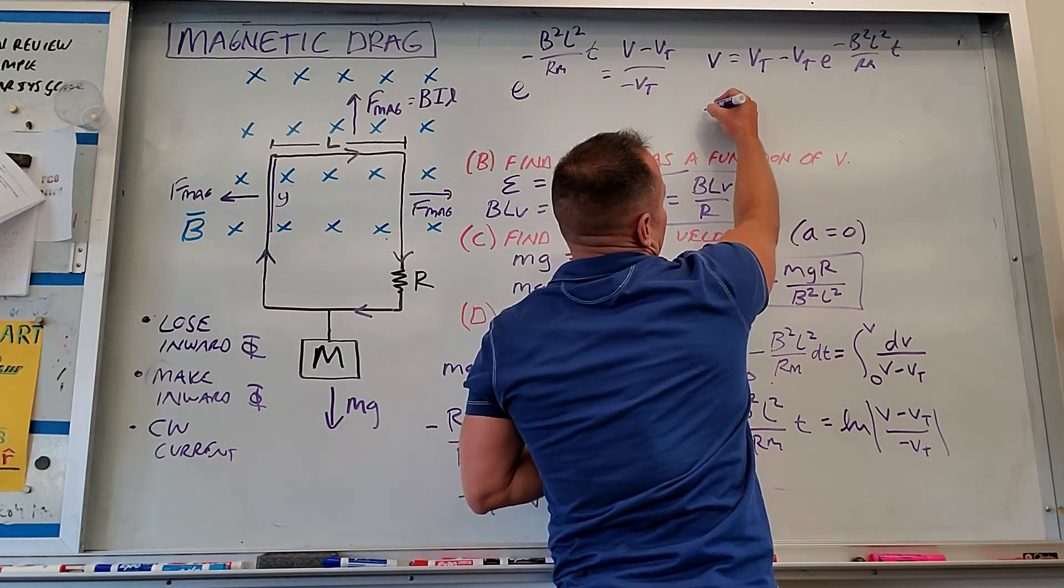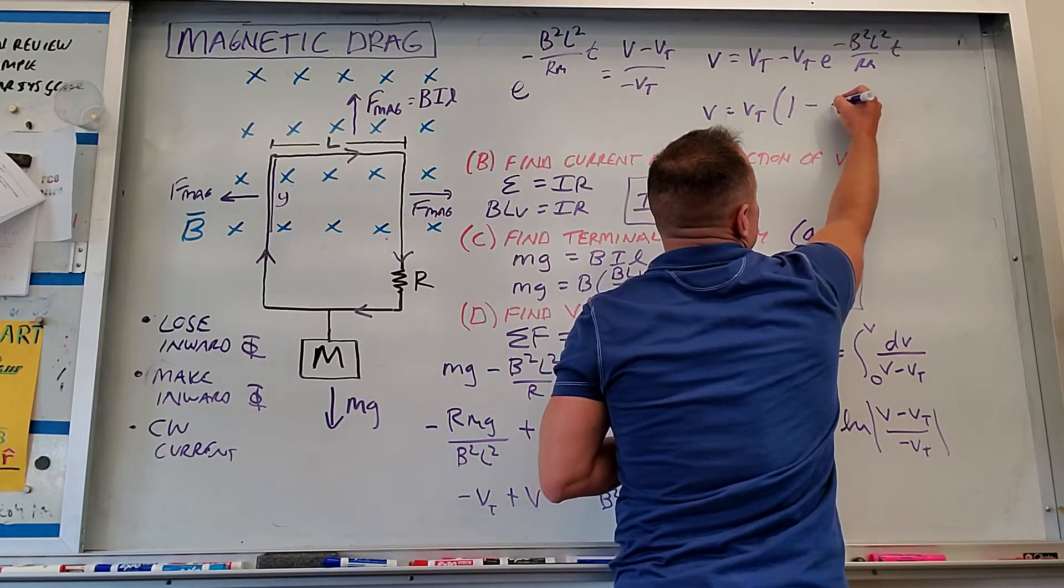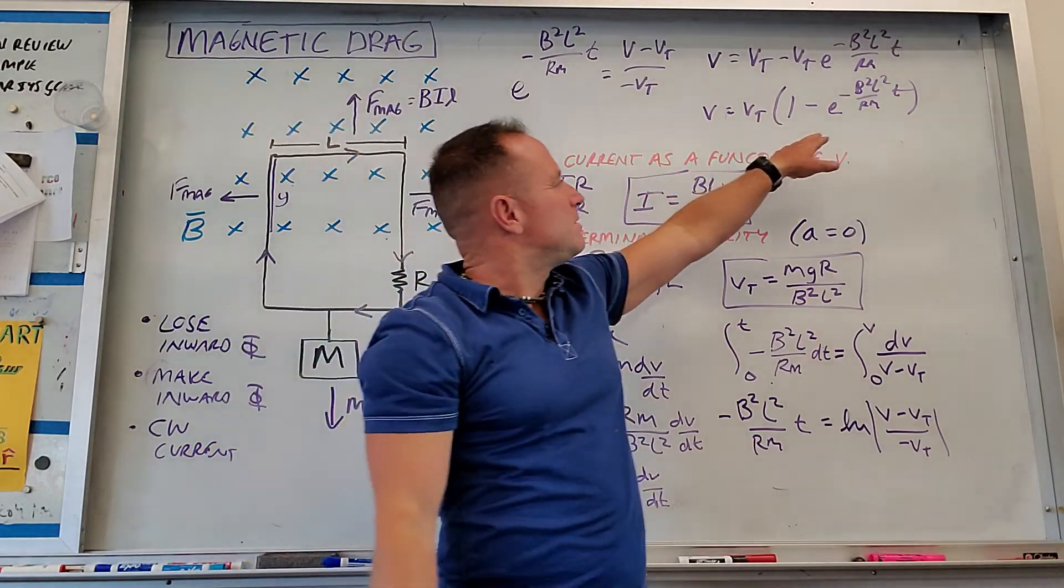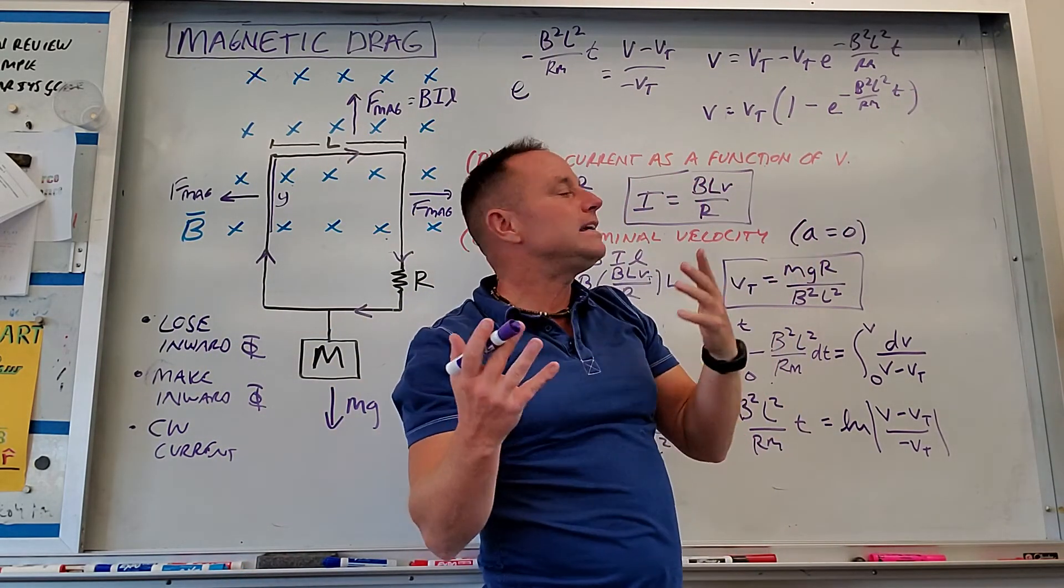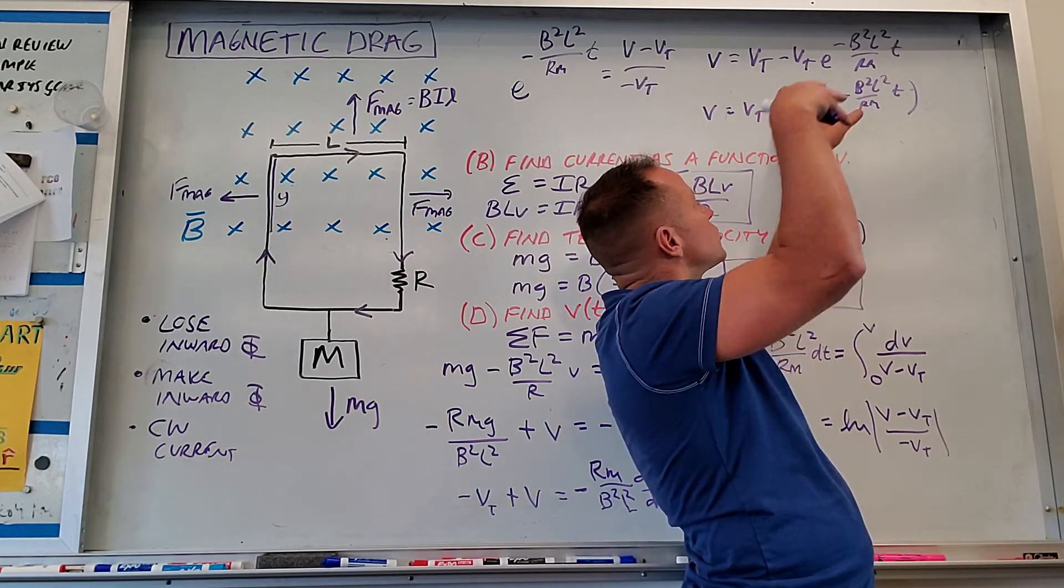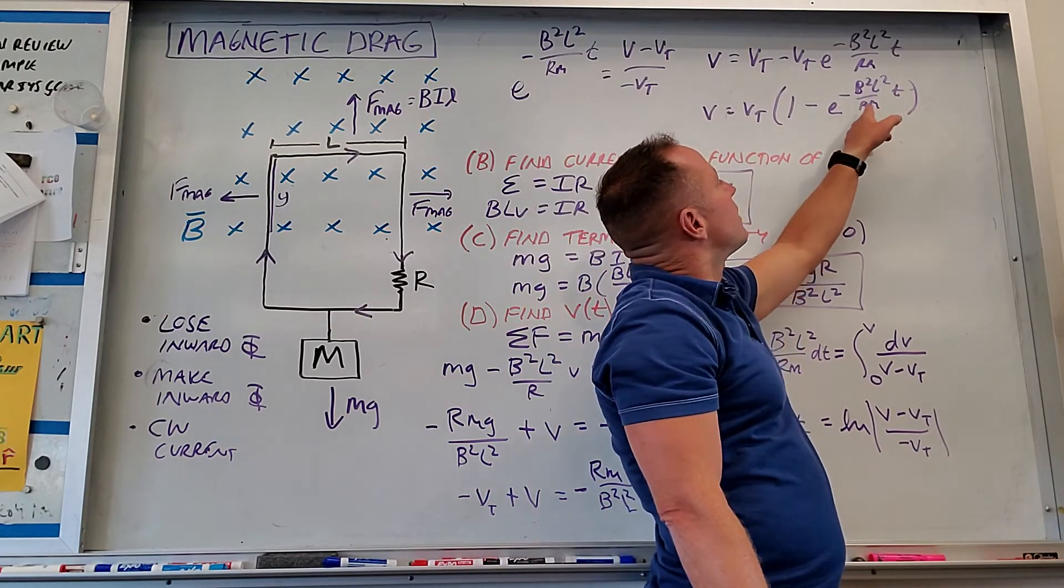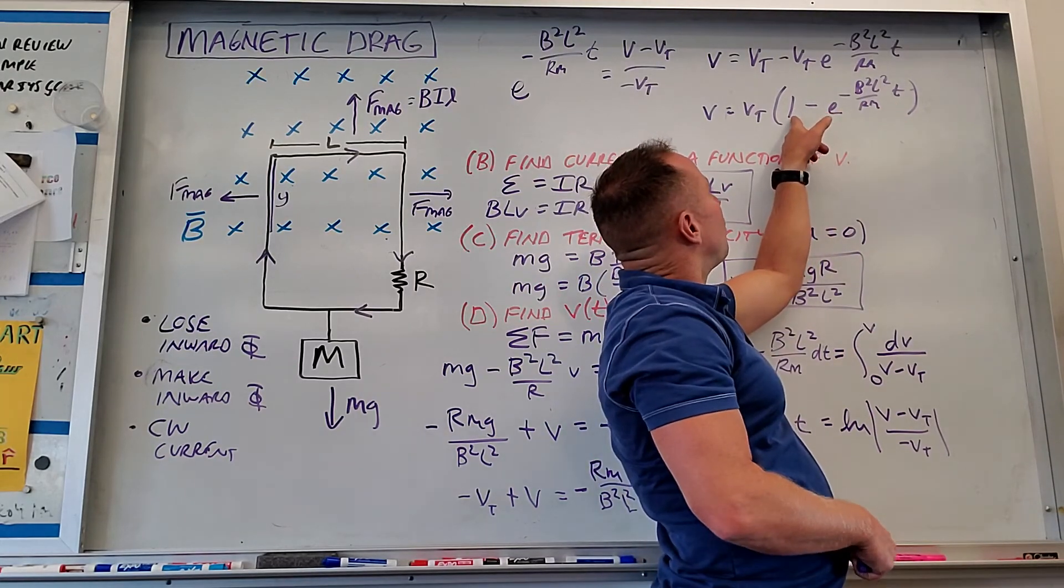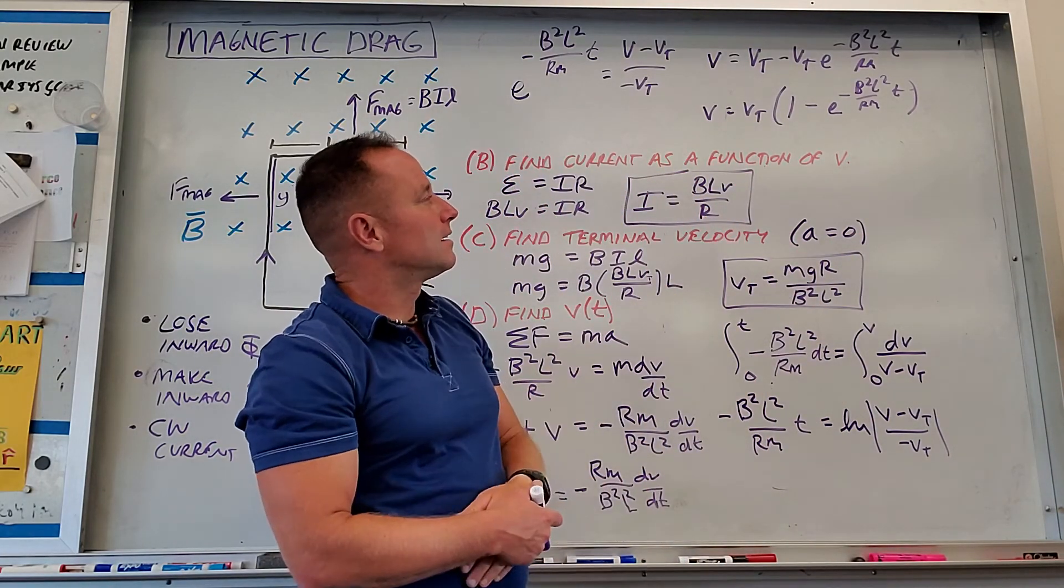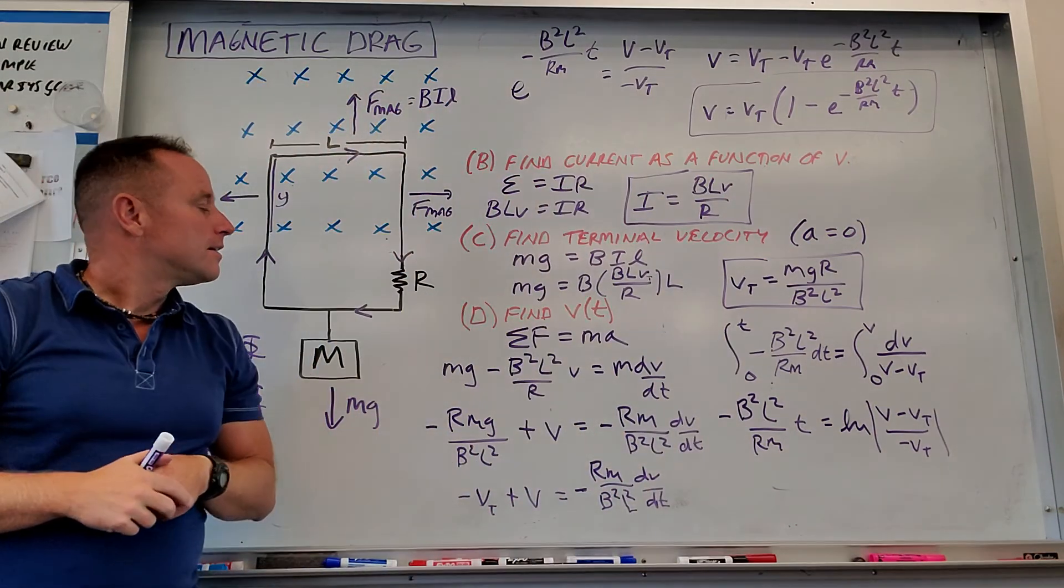Final step that's kind of optional or something I like to do is if you factor out the Vt from the right, you get V equals Vt. And then you'll get what you may recognize as an exponential approach, 1 minus e to the minus B squared L squared over Rm, T. To see what I mean by exponential approach, if t equals 0, that's when we first release it. E to the 0 is 1, so 1 minus 1 would be 0. So initially at t equals 0, this whole expression is 0. It starts from rest. If you go to t equals infinity, e to the minus infinity is basically 0. And so you'll have 1 minus 0 in the parentheses here, which means that the velocity would approach Vt at t equals infinity. So that's what we want. That's the behavior we would expect. So this is your final expression for velocity as a function of time for this case of magnetic drag.